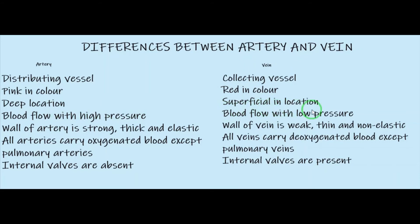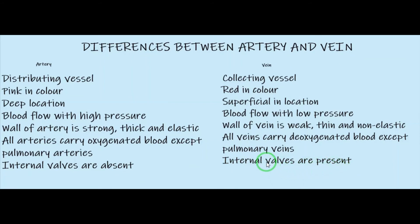Arteries are deep in location; veins are superficial. Blood flows with high pressure in arteries and low pressure in veins. The wall of an artery is strong, thick and elastic because blood flows with high pressure; the wall of a vein is weak, thin and non-elastic. All arteries carry oxygenated blood except the pulmonary artery, which carries deoxygenated blood. All veins carry deoxygenated blood except pulmonary veins, which carry oxygenated blood. Internal valves are absent in arteries but present in veins to prevent backflow of blood.